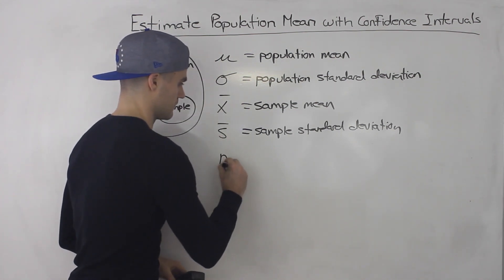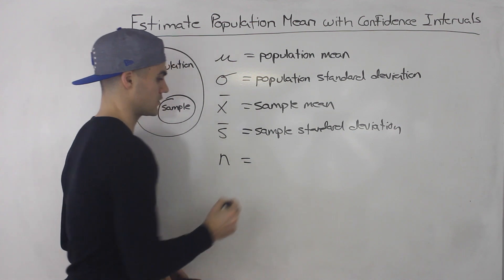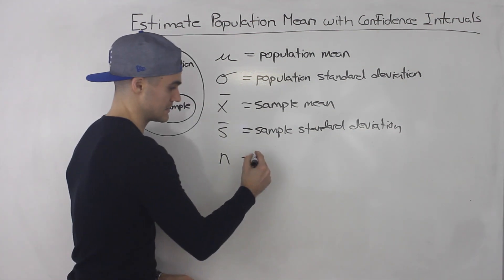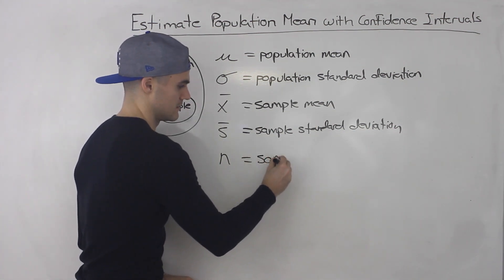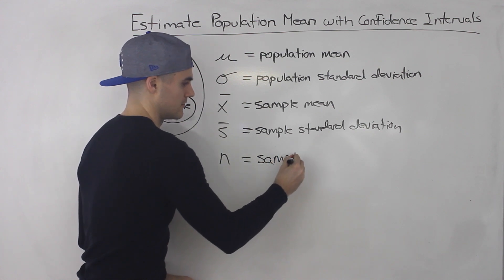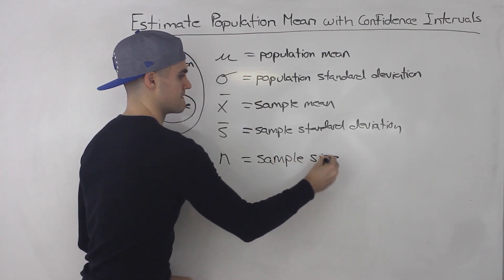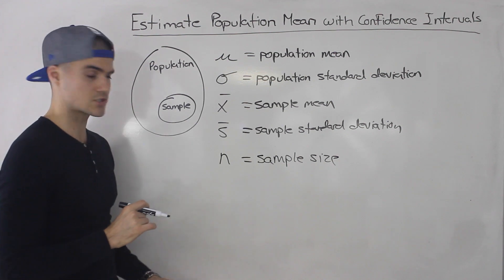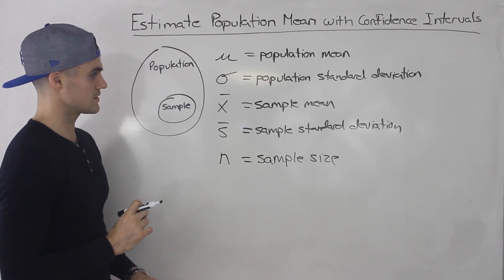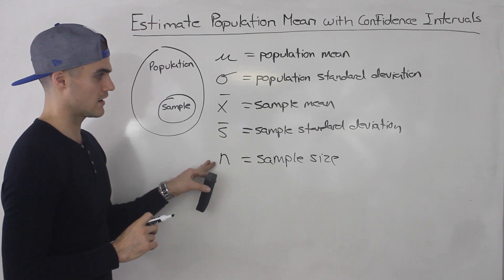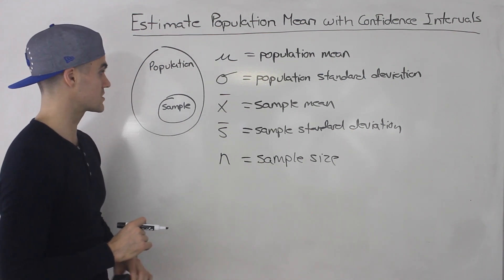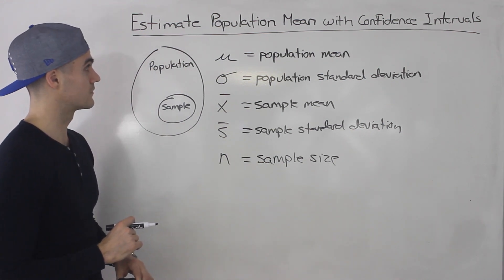There's one more — the n value. The n value is basically the sample size that you're going to be taking out of the population. These are the symbols I could think of for now, but if any come up in the future, I'll be sure to explain what they are.